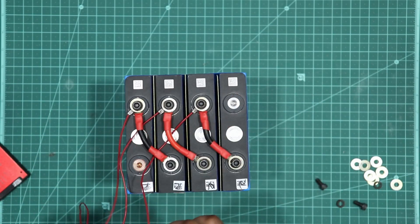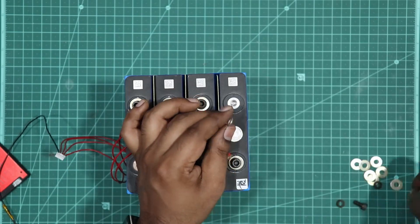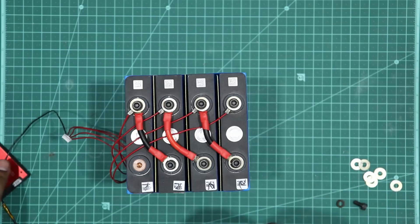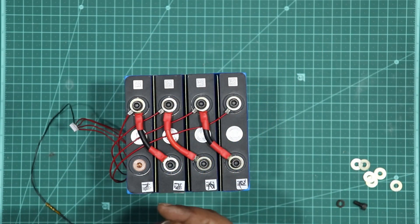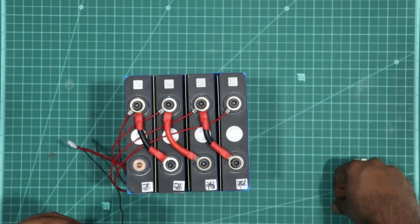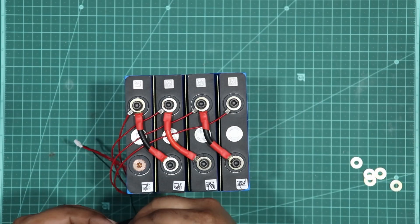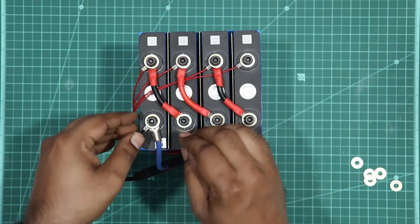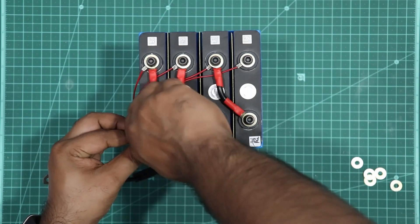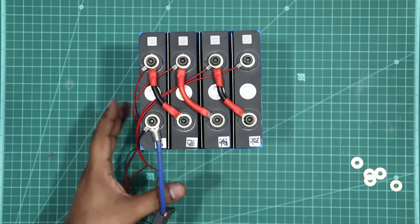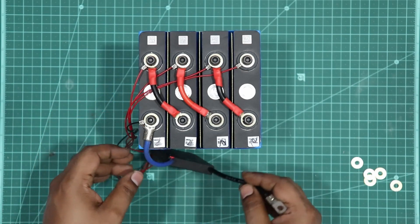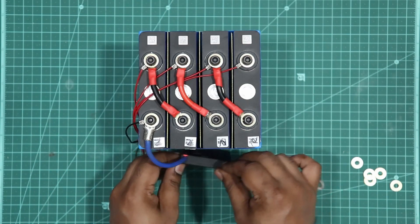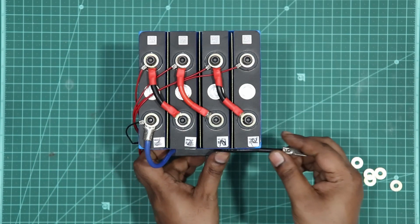We connected all the cells in series. Now let's connect the last cell positive and the negative to BMS. We're connecting the B negative of the BMS to the battery. The battery pack is pretty much ready now. You just have to hook up and make a positive wire and arrange the balance cable and we are all good to go.